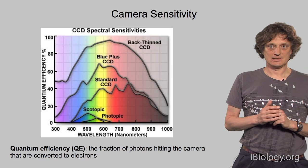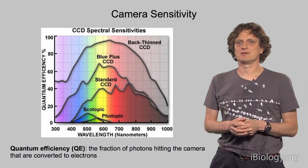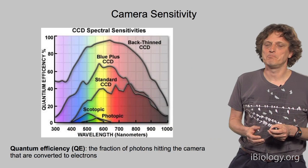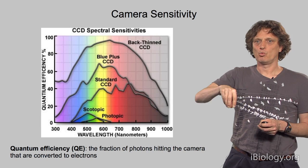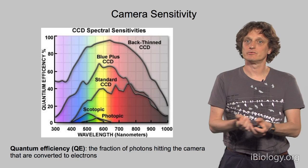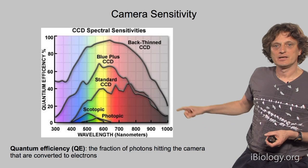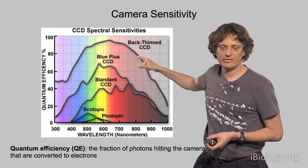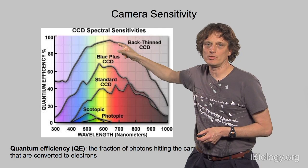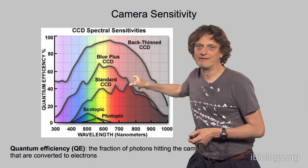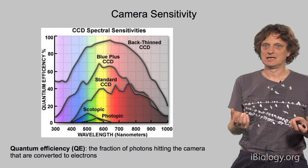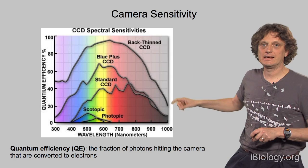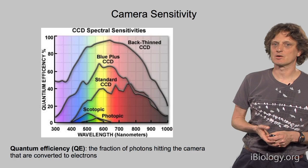Another very important camera parameter is sensitivity, and the most important measure is quantum efficiency — the fraction of photons hitting the camera that are actually converted into detectable electrons. Quantum efficiency depends on chip design; back-thinned CCDs can have very high quantum efficiency, up to 95%. It is also wavelength dependent, so you want to match it to your dyes. Many cameras nowadays have between 70 and 95% quantum efficiency.